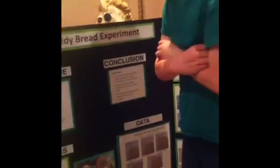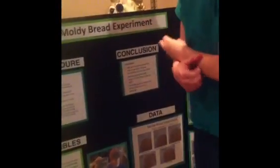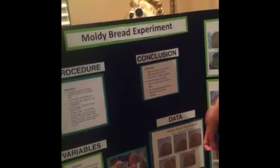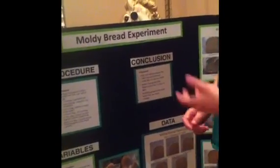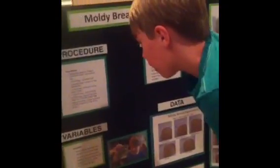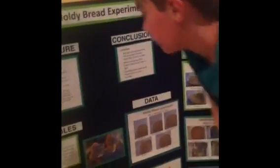Procedure: I placed five pieces of fresh bread into their own Ziploc bag. In one bag, I sprinkled salt. In the second bag, I placed it in the refrigerator. In the third bag, I placed it on a paper towel. In the fourth bag, I did nothing. In the fifth bag, I placed the Ziploc bag into a big brown paper bag. Every five days I took a picture of the progress of the mold growth.